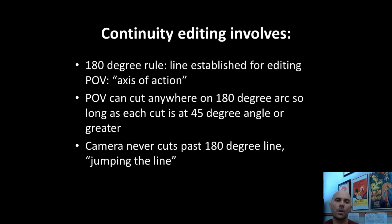Continuity editing also involves what's called the 180-degree rule. This is a line — also called the axis of action — established for editing purposes. The rule follows that once that 180-degree line is established, filmmakers can cut anywhere on the arc of that 180 degrees so long as they don't pass that line. If the camera moves past the 180-degree line, the axis of action, that is called jumping the line.